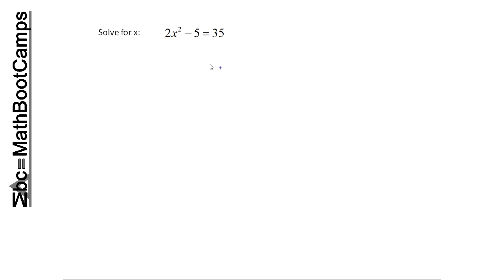Factoring here might be too much of a pain, and it's not in the classic form. We're used to seeing ax squared plus bx plus c equals zero. Now of course this is technically still in that form — b just happens to be zero. However, it's not in the classic form that we're used to seeing for something easy to factor.